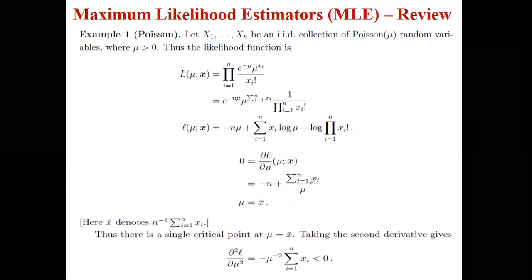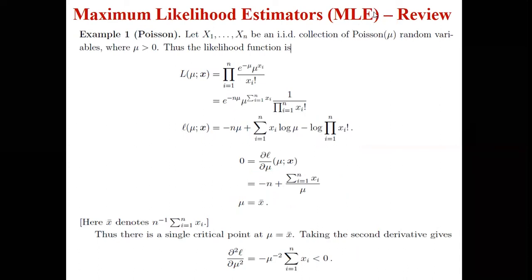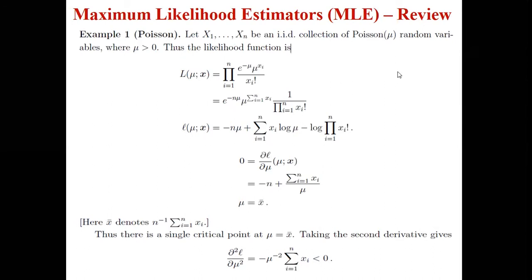After that, we check whether the sufficient condition is fulfilled. We differentiate the log-likelihood function again with respect to mu. The result is minus summation of x_i over mu squared, which is negative and less than zero. So the sufficient condition is fulfilled, which indicates that the function is maximized at the point mu equals x-bar.